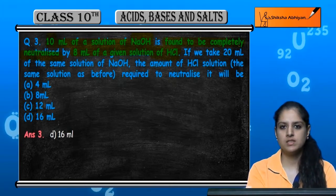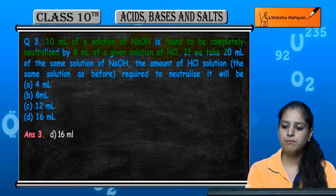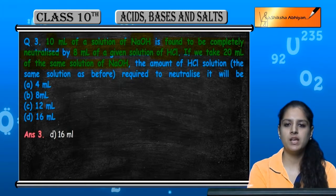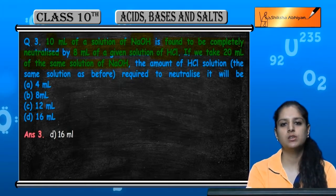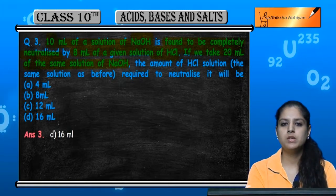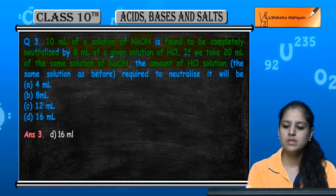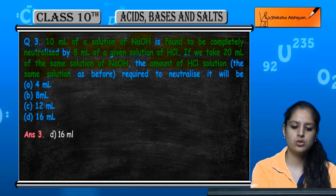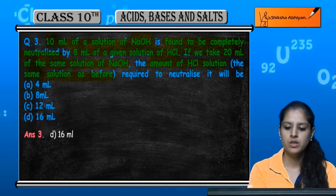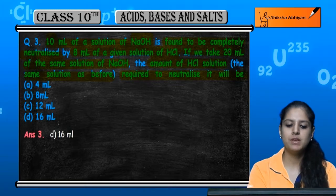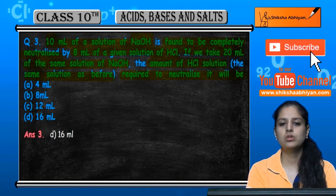If 20 ml of the same solution of NaOH is used, which means 10 ml NaOH is neutralized by 8 ml of HCl, so if we have 20 ml of NaOH, then how much HCl solution is required to neutralize it?